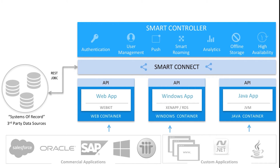In the middle, we have our transport layer, and this is made up of two parts. The Smart Controller controls access to the application — it does user management, authentication, and push notification. It also maintains sessions so that users can move from device to device using Smart Roaming and still be connected into the same session.